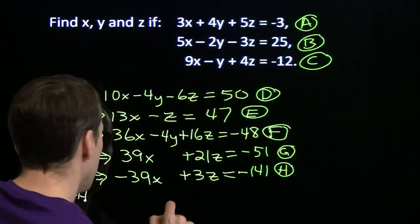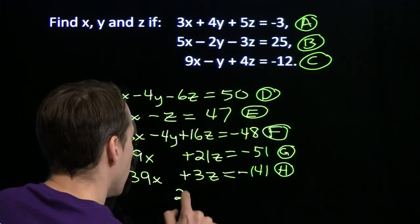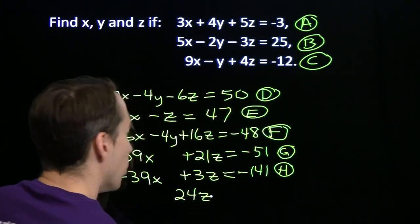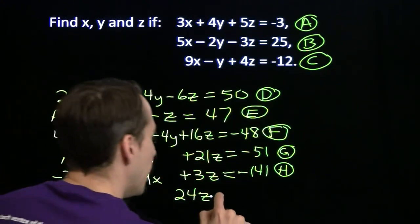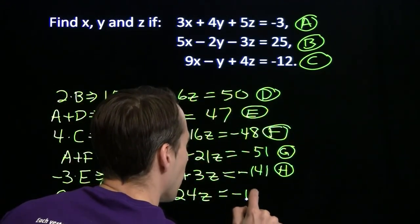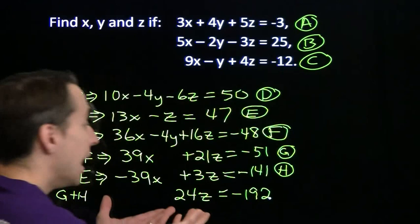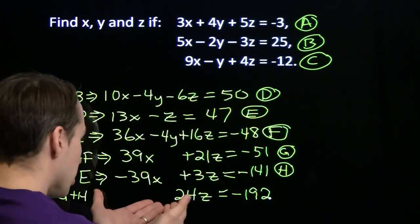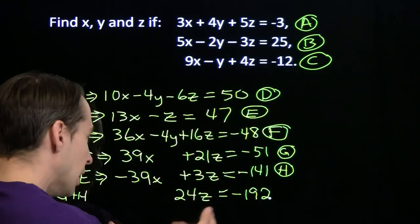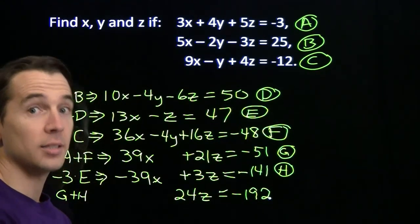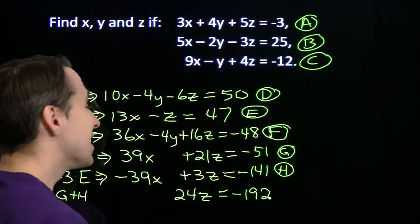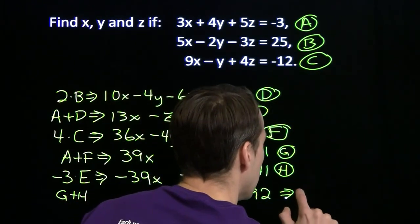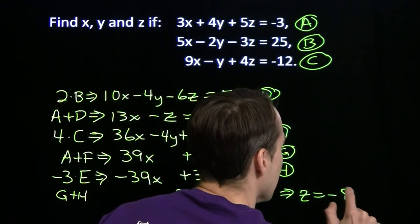X is eliminated. 21z plus 3z gives us 24z. Minus 51 minus 141 is minus 192. Now we can find z. Divide both sides by 24. I could start by dividing both sides by 2, I'll get 12z equals negative 96. Divide 12 into negative 96, we get z is negative 8.